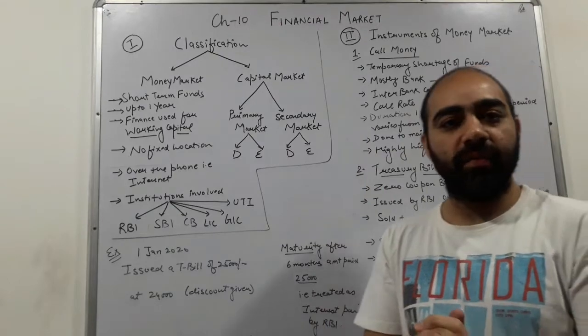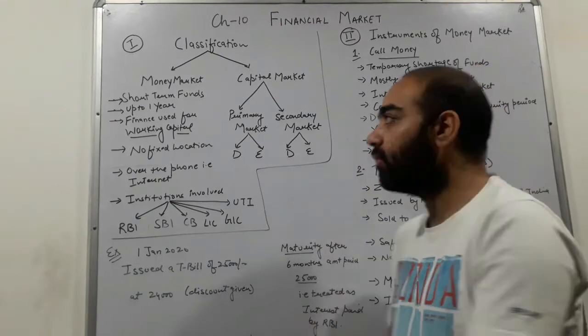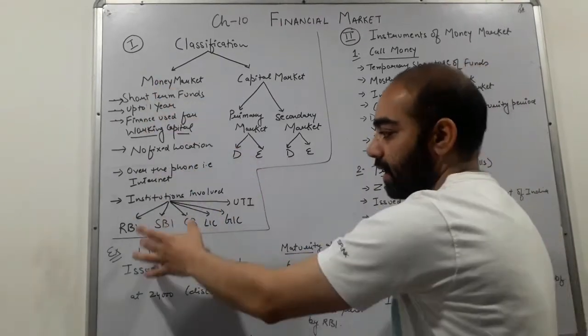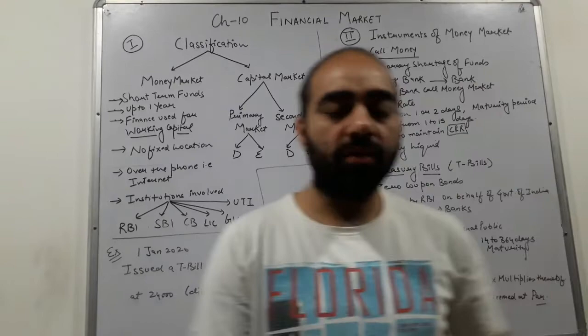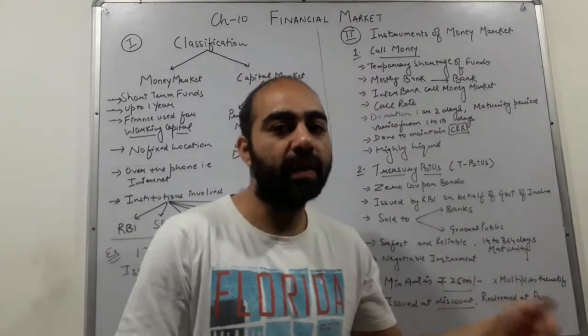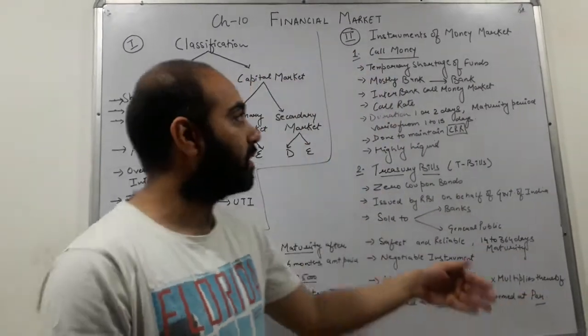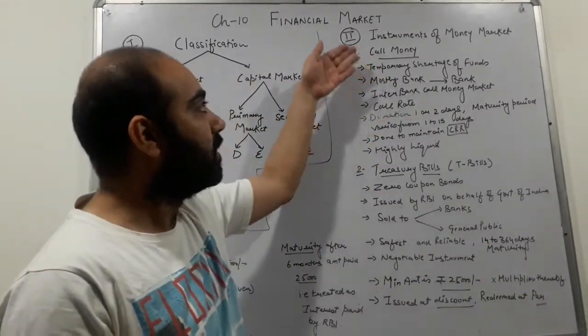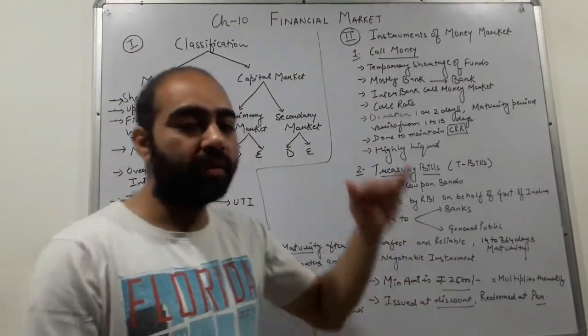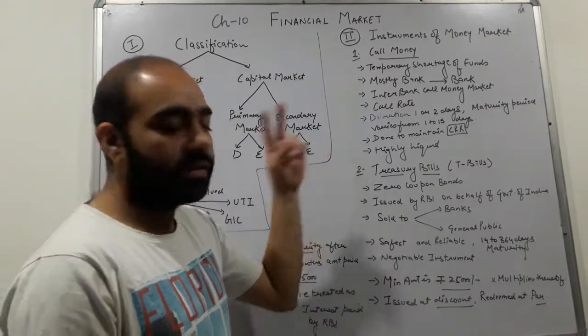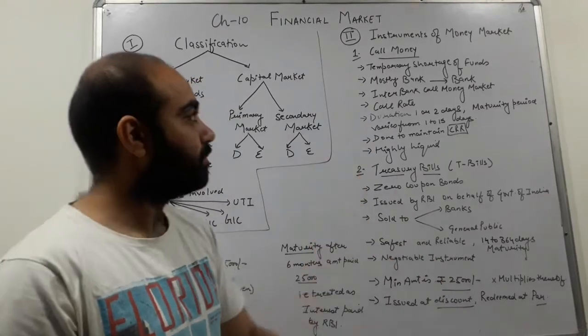Now we will go through the major instruments used in the money market. There are five particular instruments, and today we will be discussing two of the main instruments.